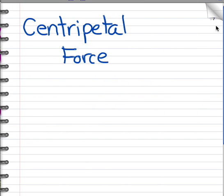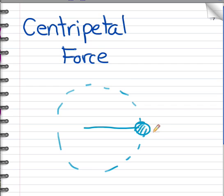If an object is moving in a circle, then there must be a force on it because it's changing direction. Remember, acceleration can involve a change in speed or a change in direction, and acceleration always requires a force. So the force that moves something in a circle is called a centripetal force. For example, suppose we have a ball tied to a string and it flies around in a circle. The centripetal force in this case is the tension of the string pulling on the ball, and the direction of centripetal force is toward the center of the circle.